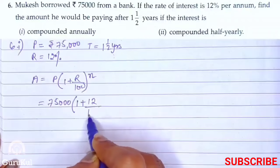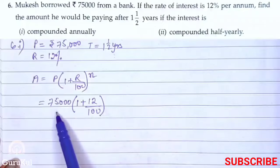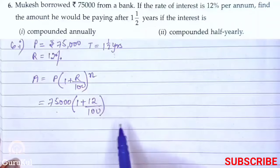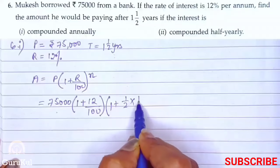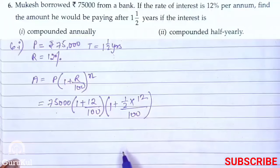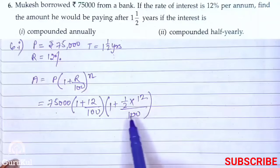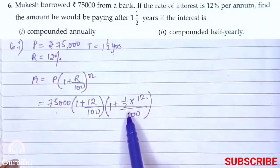Since the time is a fraction — one and a half years — we handle it carefully, as explained in sum number 4. The first bracket takes the whole number part of the time, and the second bracket takes the fractional part multiplied by R/100. So A = 75,000 × (1 + 12/100)^1 × (1 + ½ × 12/100).